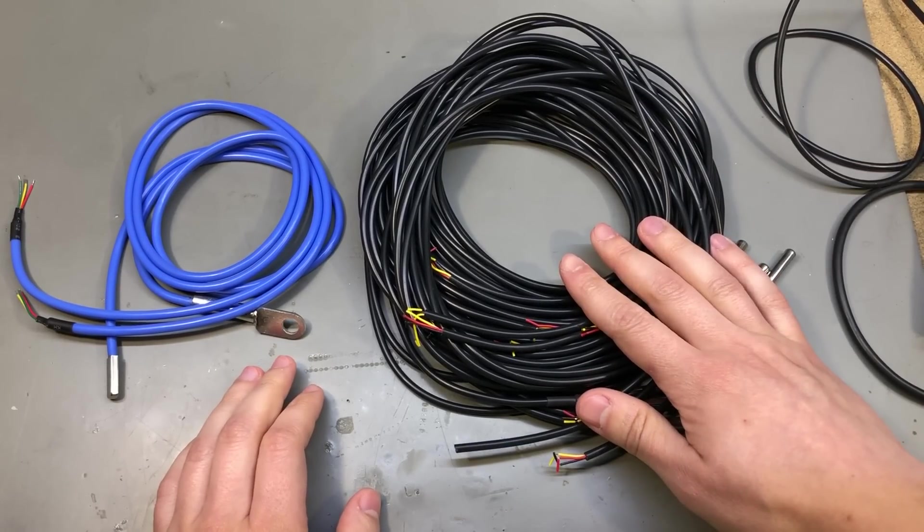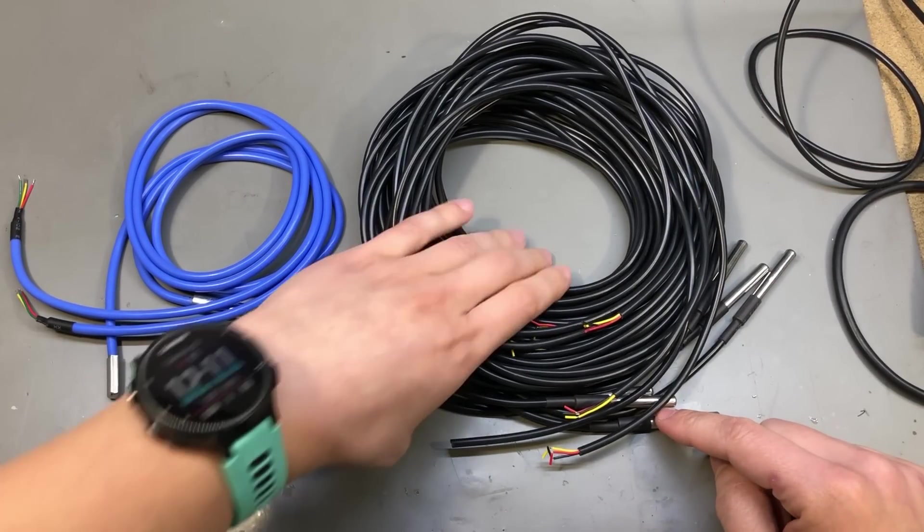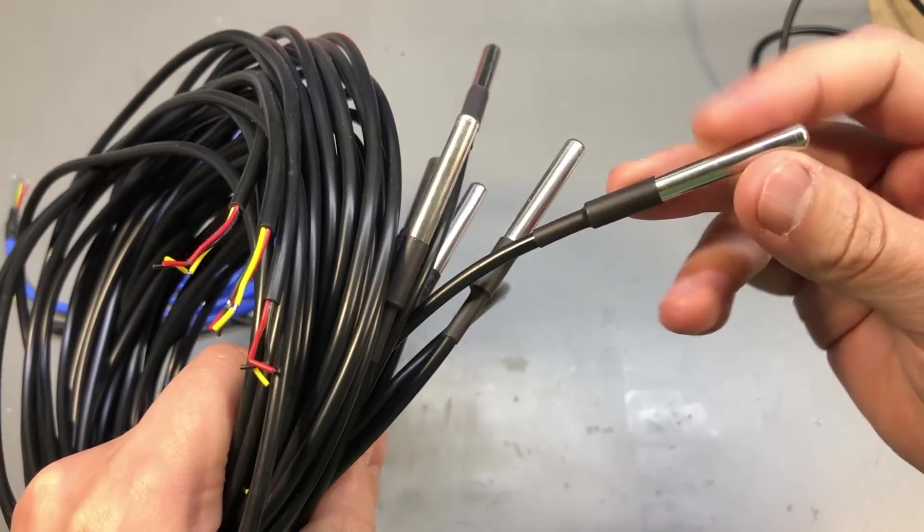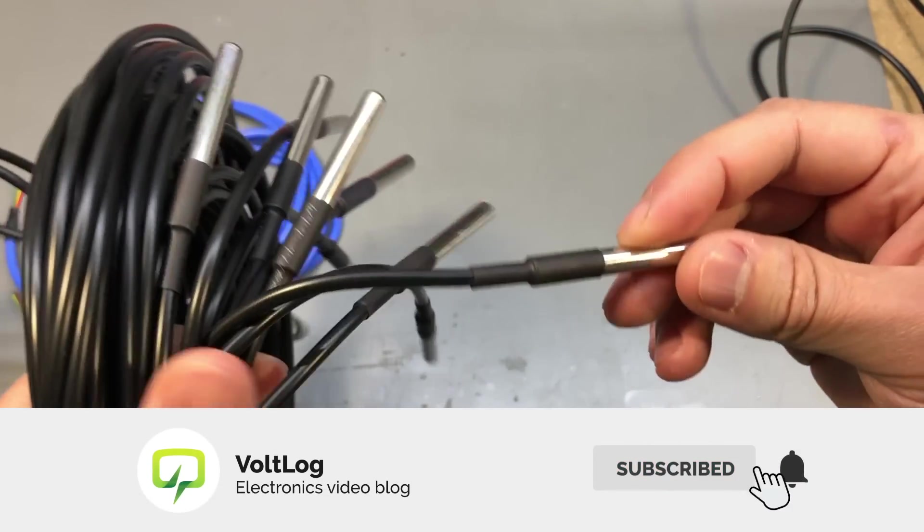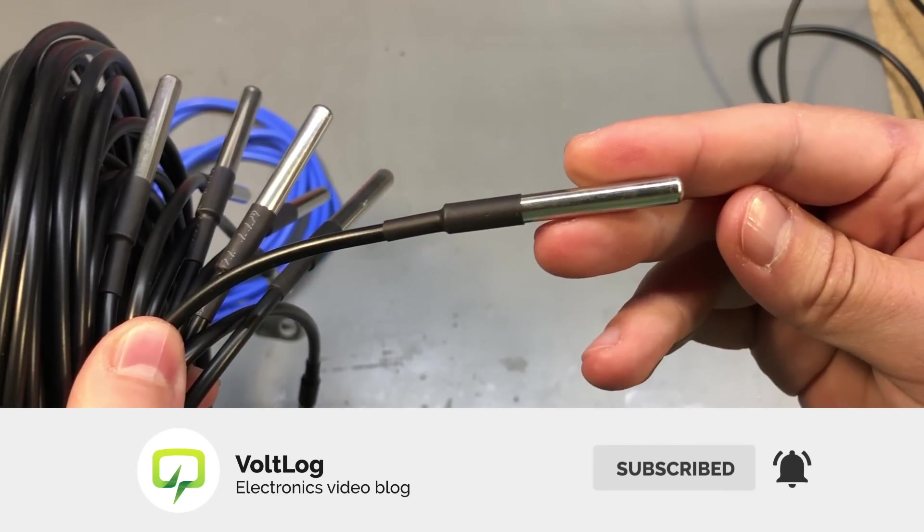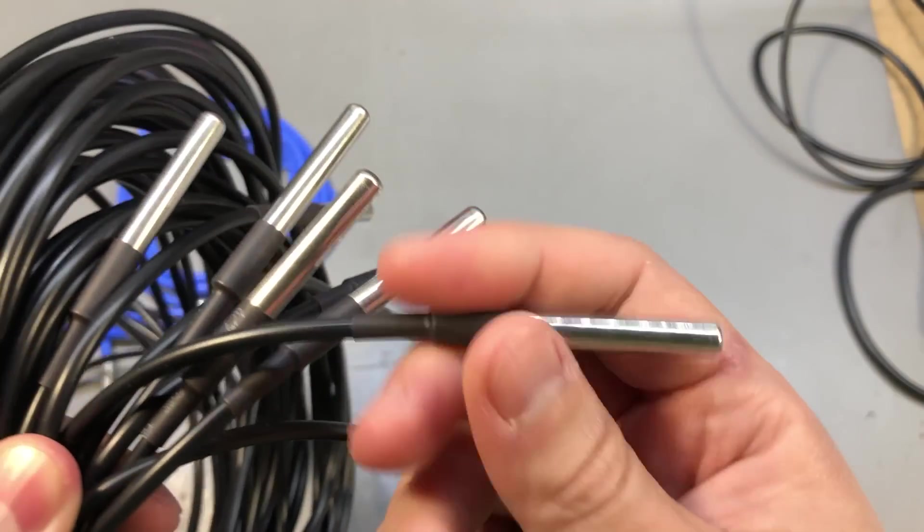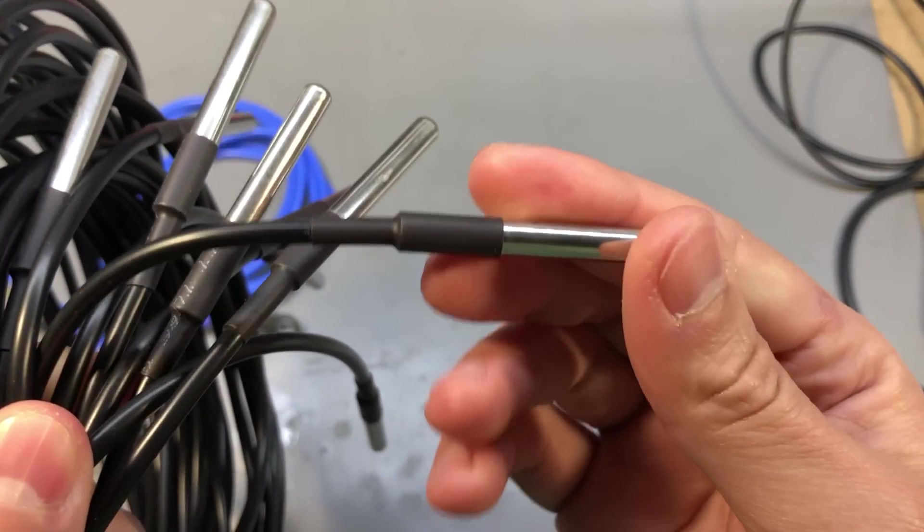Next up I have a bunch of one wire temperature sensors and each one of these capsules should contain a DS18B20 or a compatible one. It is a one wire temperature sensor and the way they are potted inside these capsules should mean that they are waterproof.